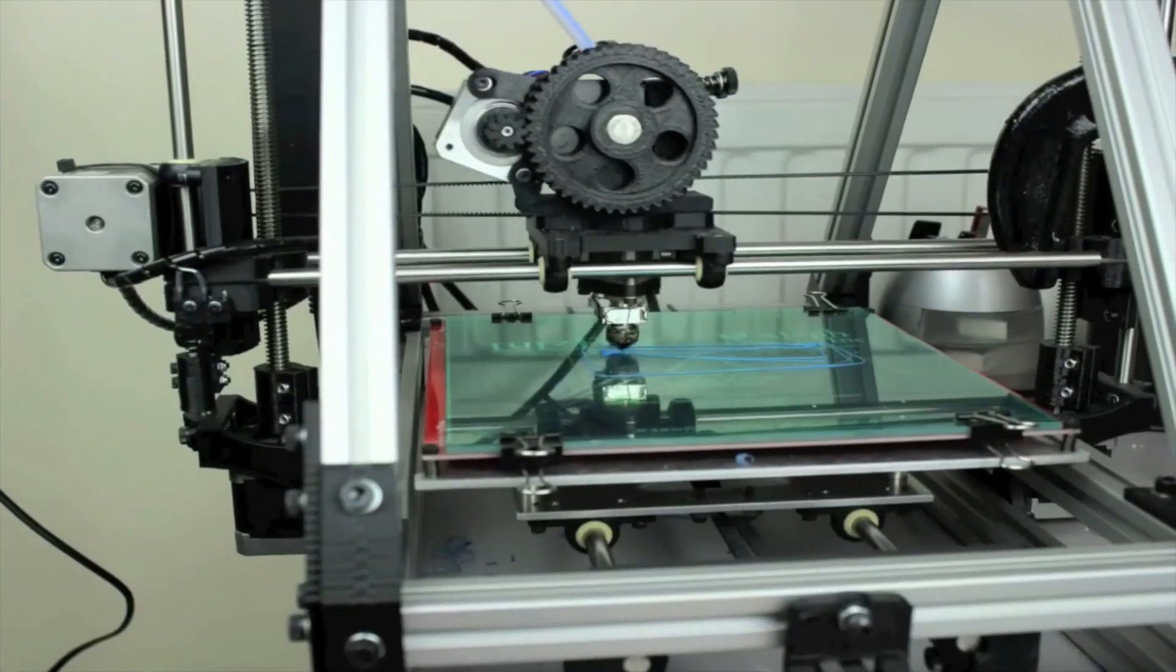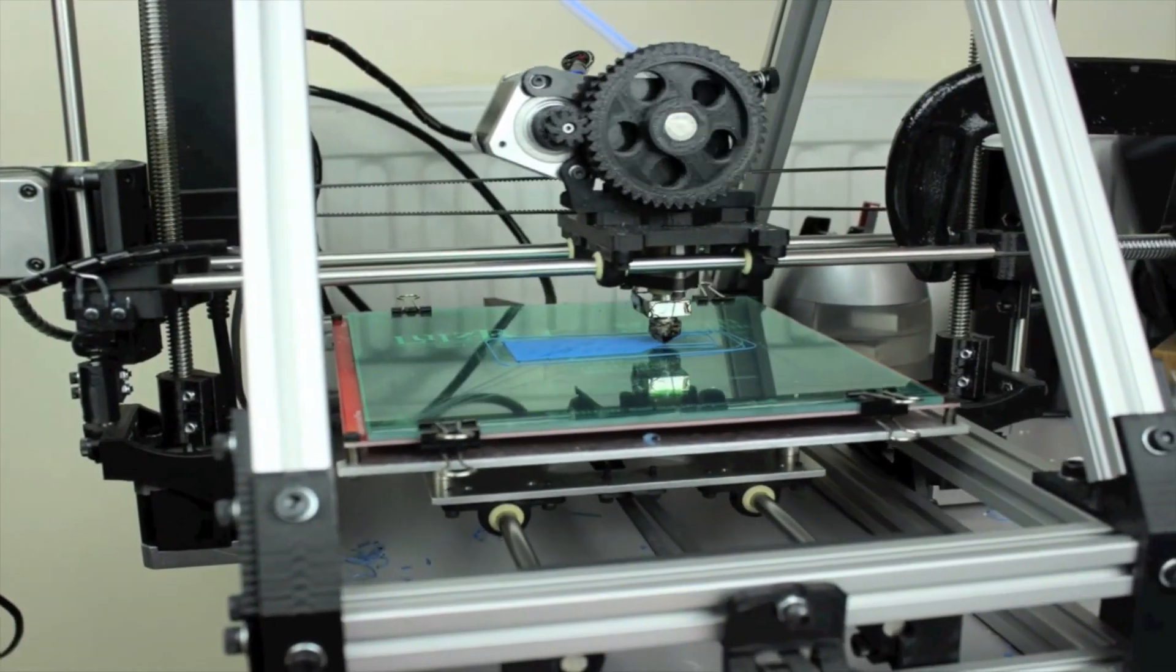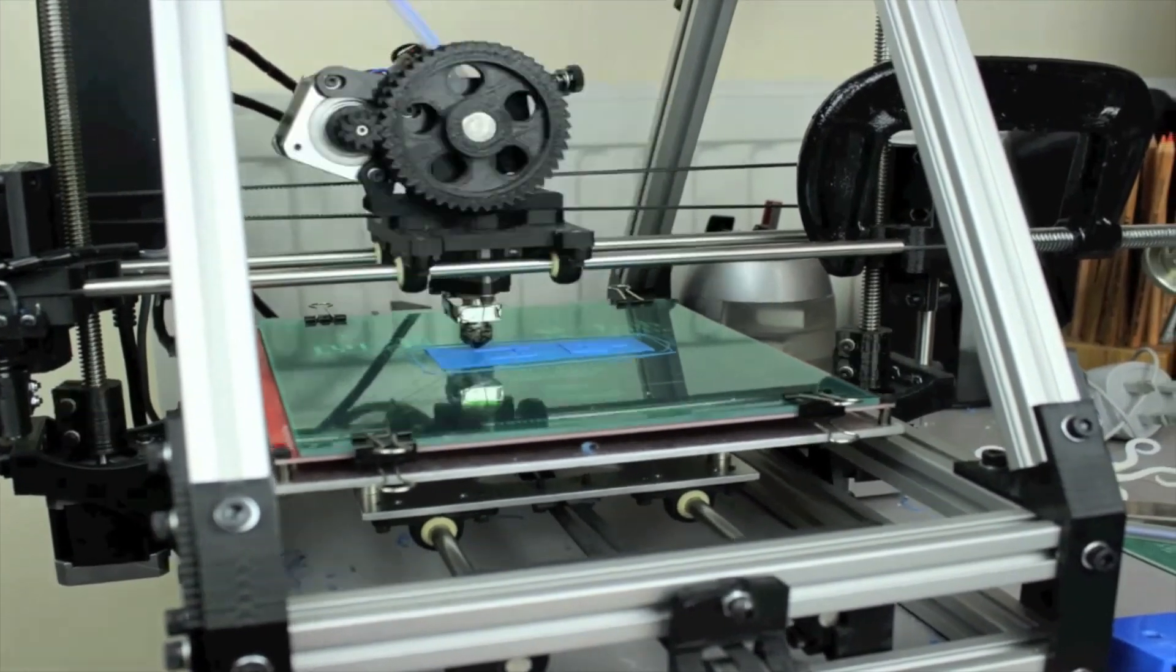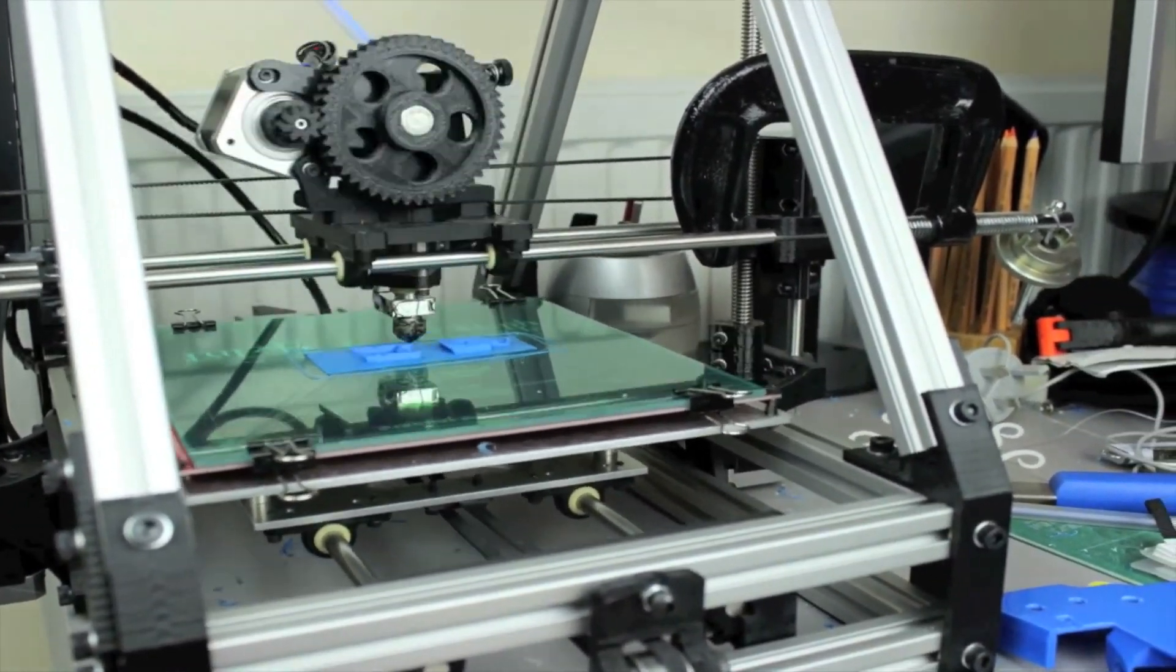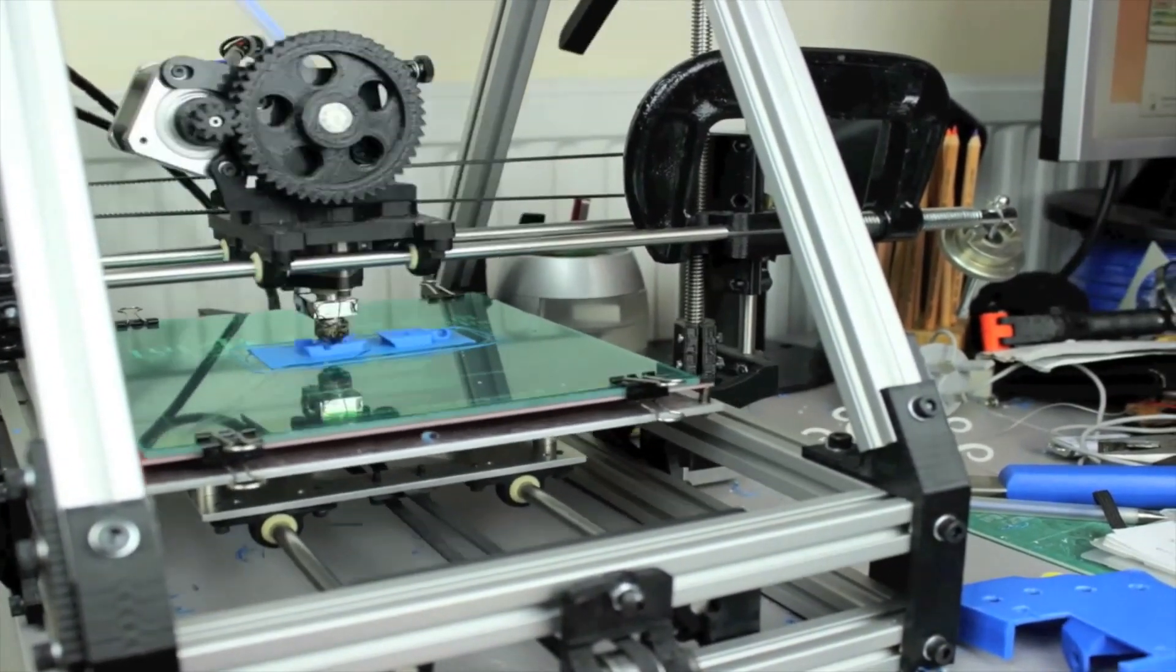The hand is 3D printed, so we print the parts off in plastic, and that's one of the things that makes it so cheap to make. We can use plastic instead of expensive materials like titanium or carbon fiber, and we can still get the strength that we need to make it robust enough for an amputee to use day-to-day.